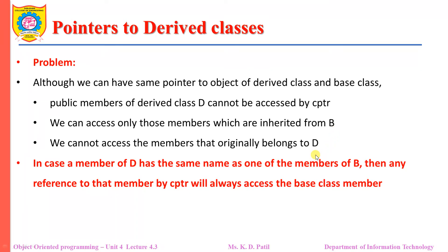That means if class D is inheriting some of the members from class B, then those members can be accessed by the CPTR pointer which is created from class B. But if we have some members which belong only to derived class D and which are not inherited from class B, then those members cannot be accessed by such a pointer.